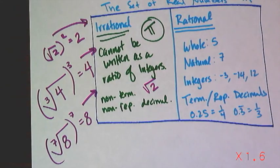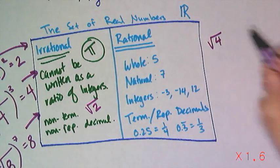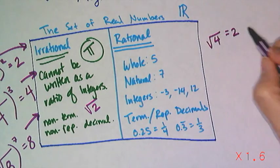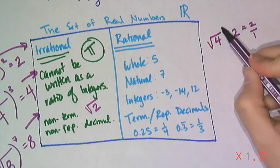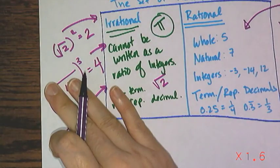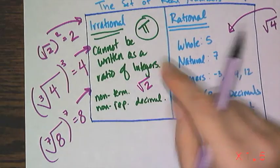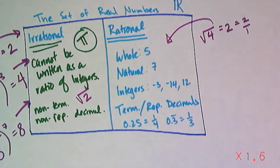Now, not all roots are irrational, because if I look at the square root of 4, the square root of 4 is 2, which can be written as 2 over 1, and that is rational. So, just because something has a root does not mean it's irrational. You have to check inside to make sure that it indeed is irrational.